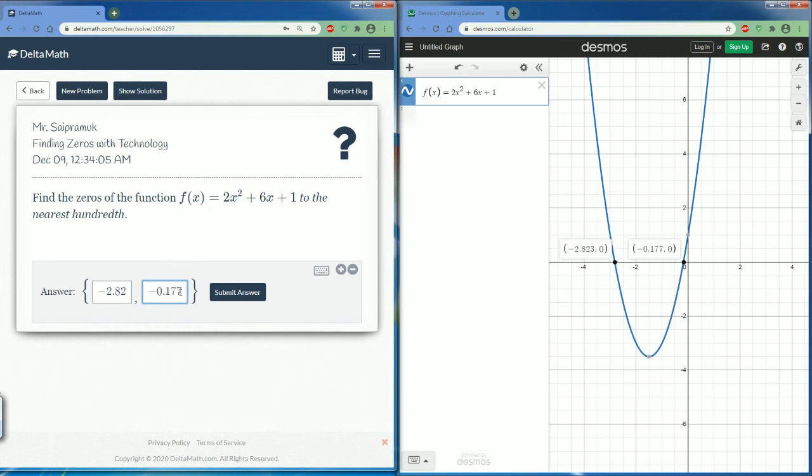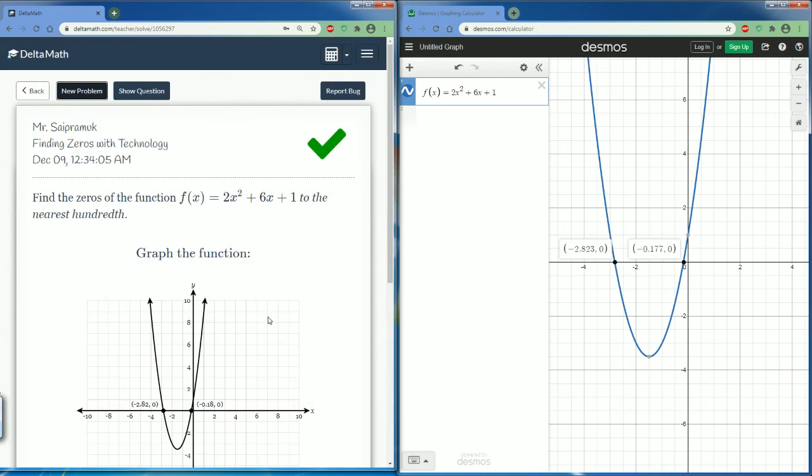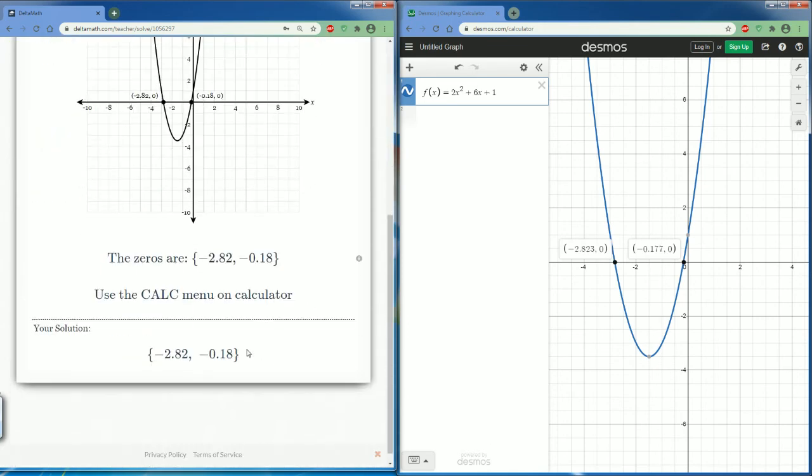The last number here is a seven. That means it's going to be rounded up. So 0.177 becomes 0.18. It rounds up. Hit submit your answer. And we did it correctly. Make sure you were able to round.